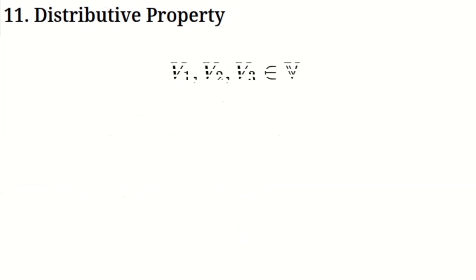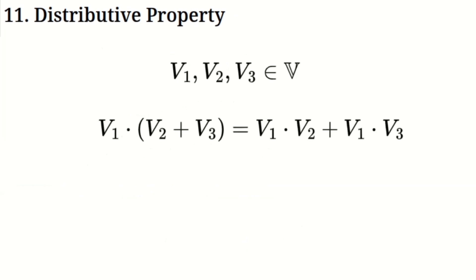Distributive property. This property ensures that multiplication distributes over addition. In simple terms, if you multiply a virtual number by the sum of two other virtual numbers, you get the same result as multiplying the first virtual number by each of the other two and then adding the results together. This helps maintain the consistency of basic mathematical rules within the virtual number system.